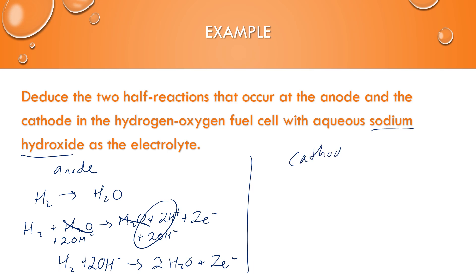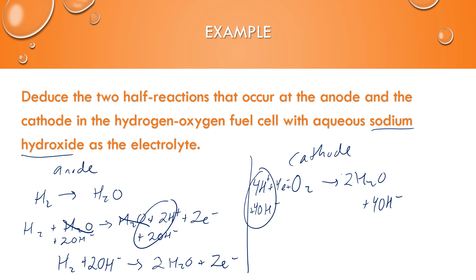At the cathode, oxygen gas is turning into water vapor. Balance oxygens first, then add four hydrogen ions and four electrons to cancel the charge. Because it's a basic solution, cancel out the hydrogens by adding four hydroxide ions to both sides — this makes four water molecules, two of which cancel. We're left with O₂ + 2H₂O + 4e⁻ → 4OH⁻. Those are the half reactions at the anode and cathode for this example.